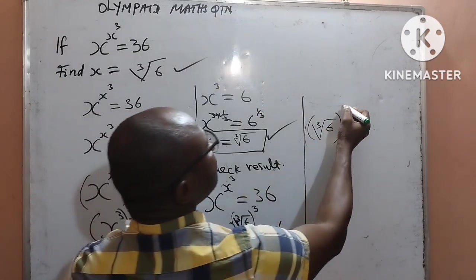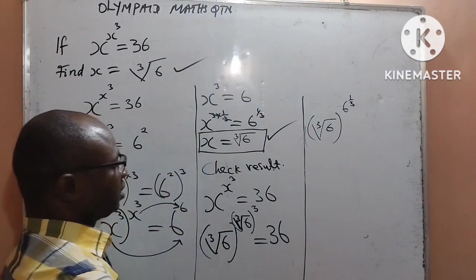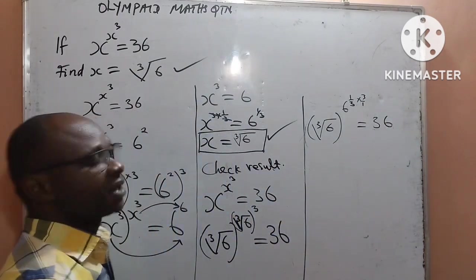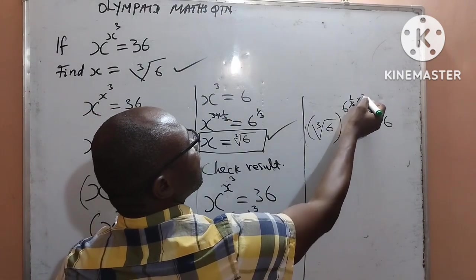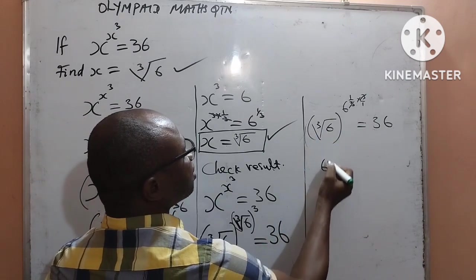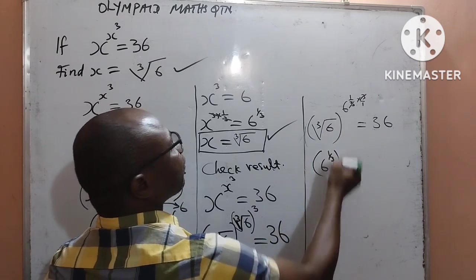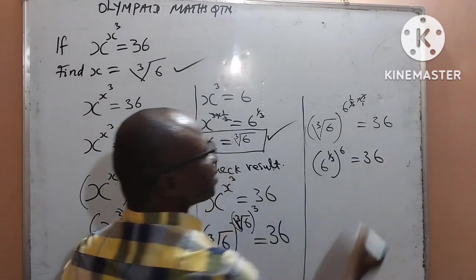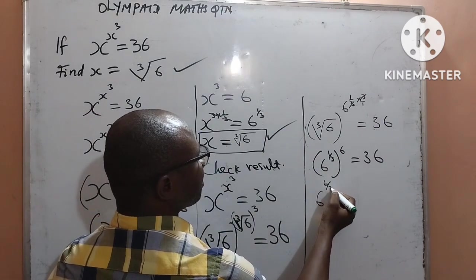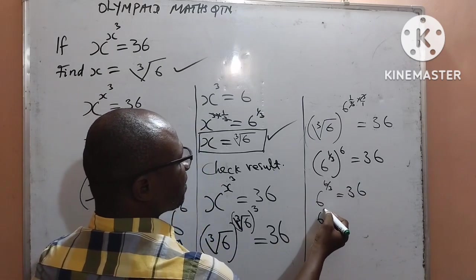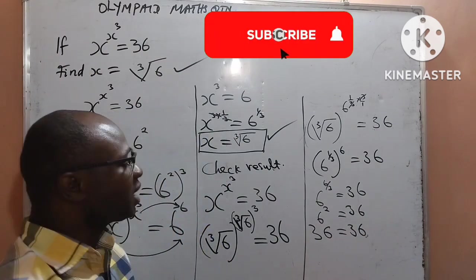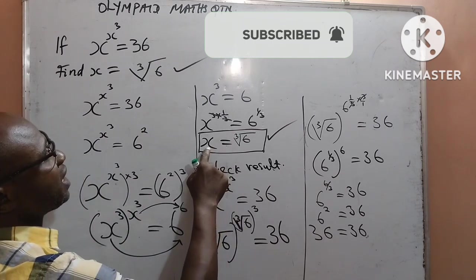I write the cube root of 6 as 6 to the power of 1 over 3, then multiply by 3, which gives 6 to the power of 1, since 3 cancels 3, leaving the power as 6. From the base, I write the cube root of 6 as 6 to the power of 1 over 3, and the remaining power is 6, so 1 over 3 multiplied by 6 gives 6 to the power of 6 over 3, which equals 6 to the power of 2, equal to 36. So 6 to the power of 2 equals 36, which confirms the answer is correct.